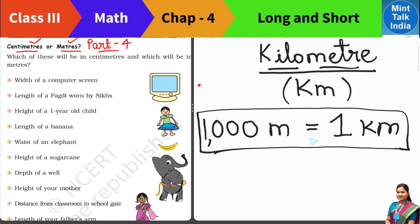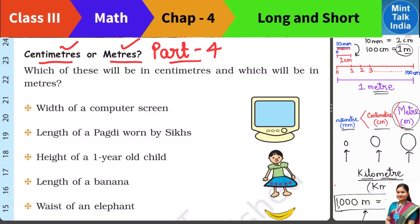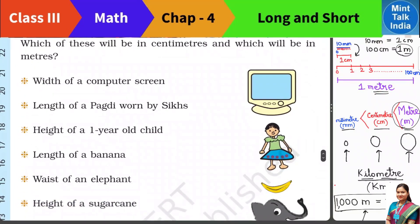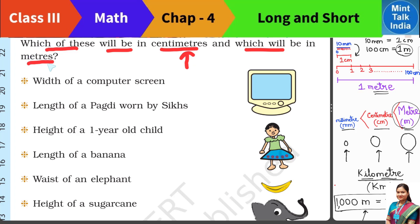We will solve a lot of word problems on this in the next class. Let us go back to our textbook. Now we have to tell which of these things will be measured in cm and which will be measured in meters. Things we can measure with a ruler, we write in cm; things that are bigger, we measure in meters.